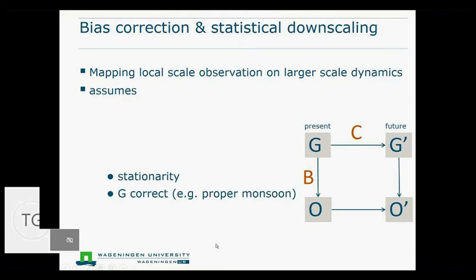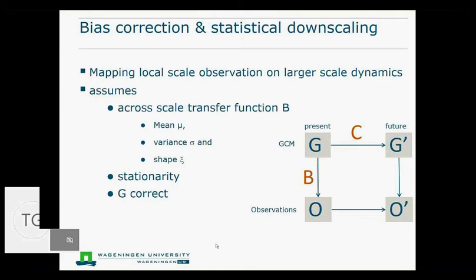The bias correction has some assumptions. It can be used to correct for different components of the distribution. Sometimes you only need to correct for the average, but very often you also need to correct for the variance. That's especially important for precipitation. The variability in precipitation in the climate model might be different from what you observed.